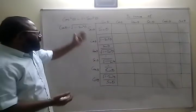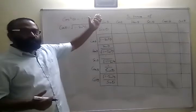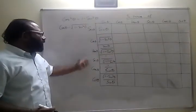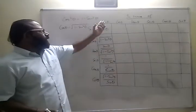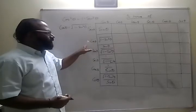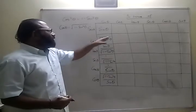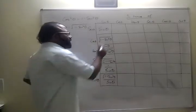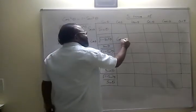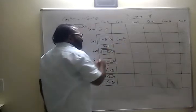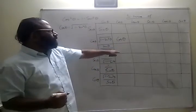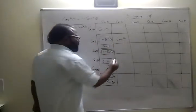Now, using the same method, let us express all ratios in terms of cos theta. Let's do it the easy way: cos theta is just cos theta, and secant theta is 1 by cos theta.